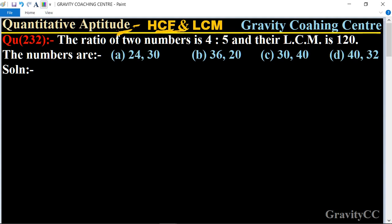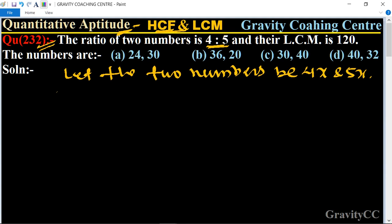Quantitative aptitude chapter HCF and LCM, question number 232. The ratio of two numbers is 4 is to 5 and their LCM is 120, so the numbers are which one? In this question, first of all we let the two numbers be 4x and 5x.